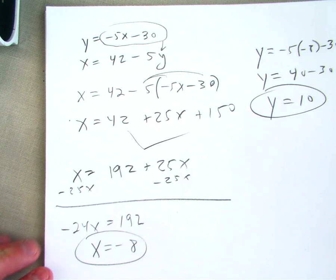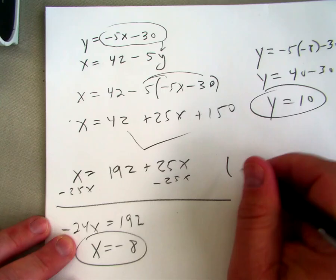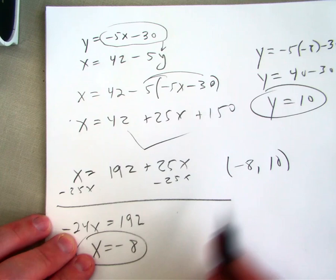So y would equal 10. And the coordinate where the two lines cross is negative 8, 10.